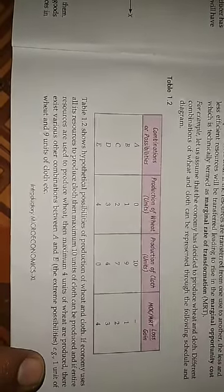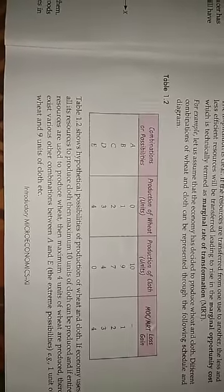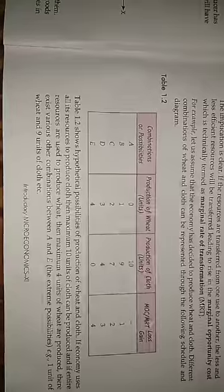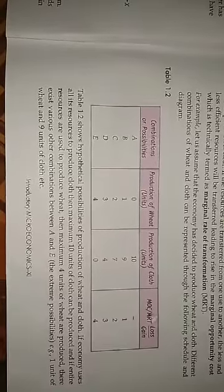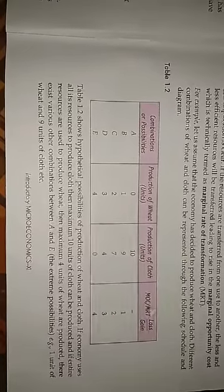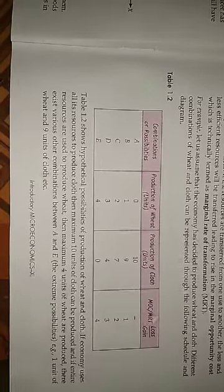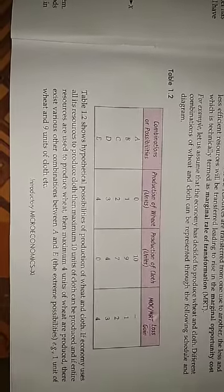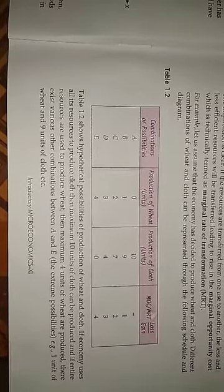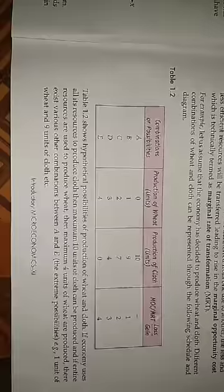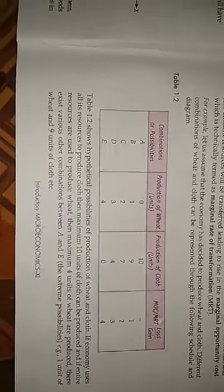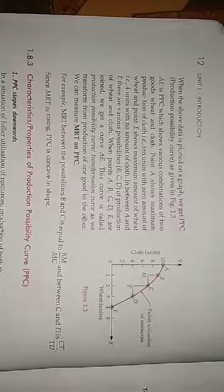Table 1.2 shows hypothetical possibilities of production of wheat and cloth. If the economy uses all its resources to produce cloth, then a maximum of 10 units of cloth can be produced. If entire resources are used to produce wheat, then a maximum of 4 units of wheat are produced. There exist various other combinations between A and E — for example, 1 unit of wheat and 9 units of cloth. When the above data is plotted on a graph, we get a PPC as given in figure 1.3.